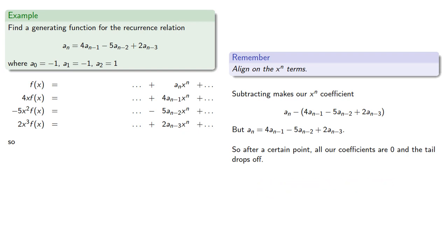And in fact, the first value the recurrence relationship can compute is a3, which means that the x cubed and higher degree terms vanish automatically.